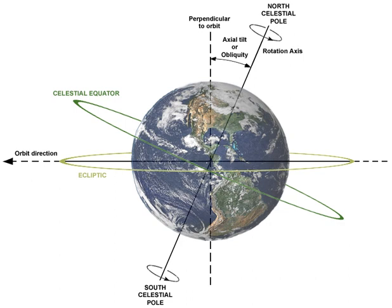In astronomy, axial tilt, also known as obliquity, is the angle between an object's rotational axis and its orbital axis, or equivalently, the angle between its equatorial plane and orbital plane.